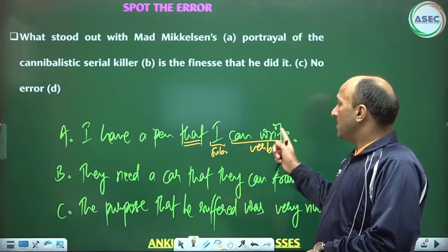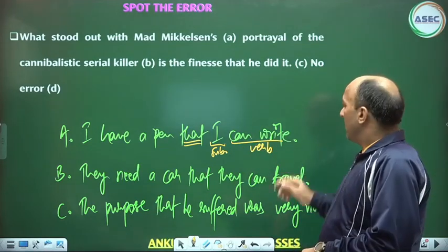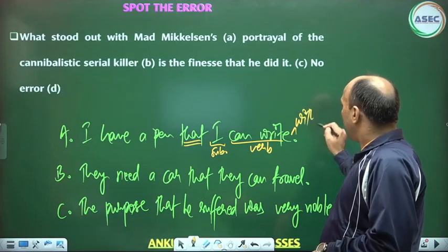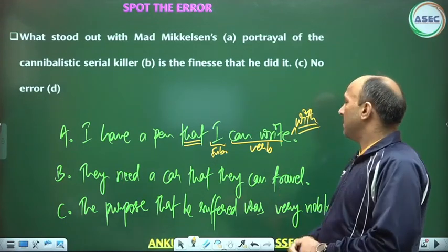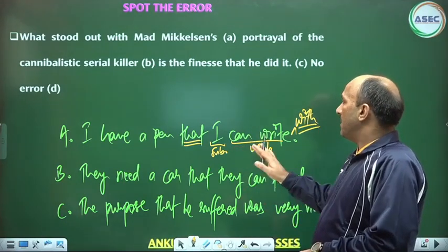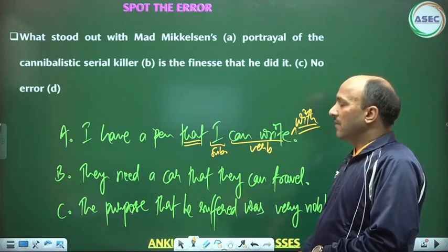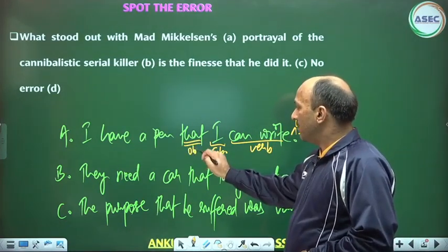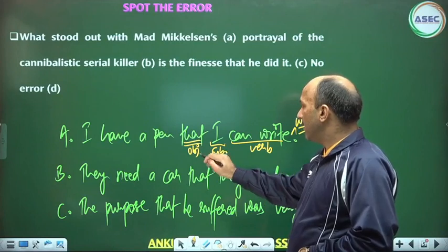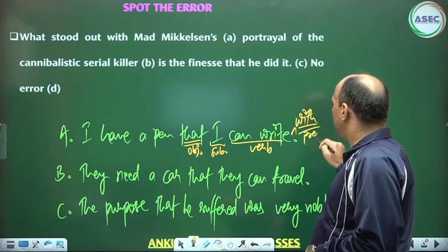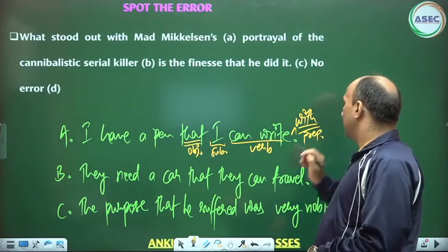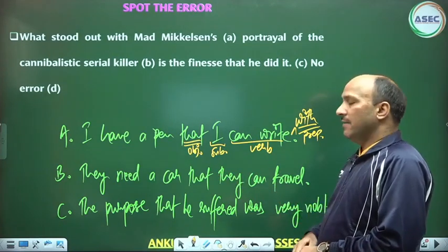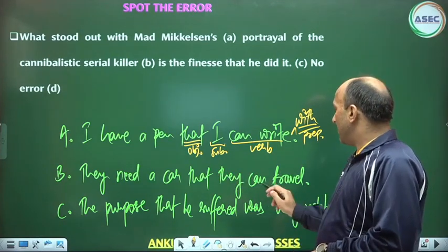It can be subject — pen, poem, story, letter — the instrument will make a pen. The purpose and the instrument can be the subject. With the object: they need a car that they can travel. Now we have 'can travel' as a verb.